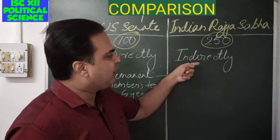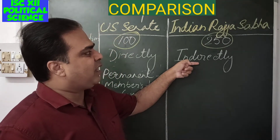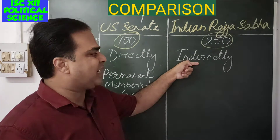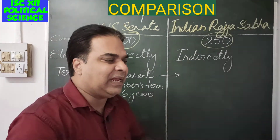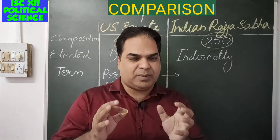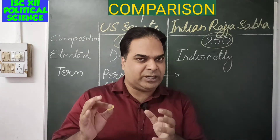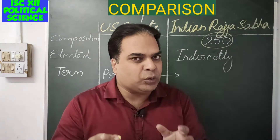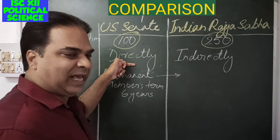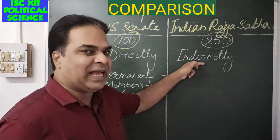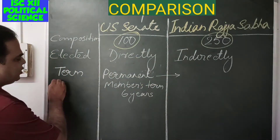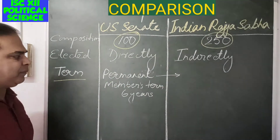In contrast, Indian Rajya Sabha members are elected indirectly by the state assemblies, as per the number of seats allotted to each state. So while US Senate members are elected directly, Indian Rajya Sabha members are elected indirectly.